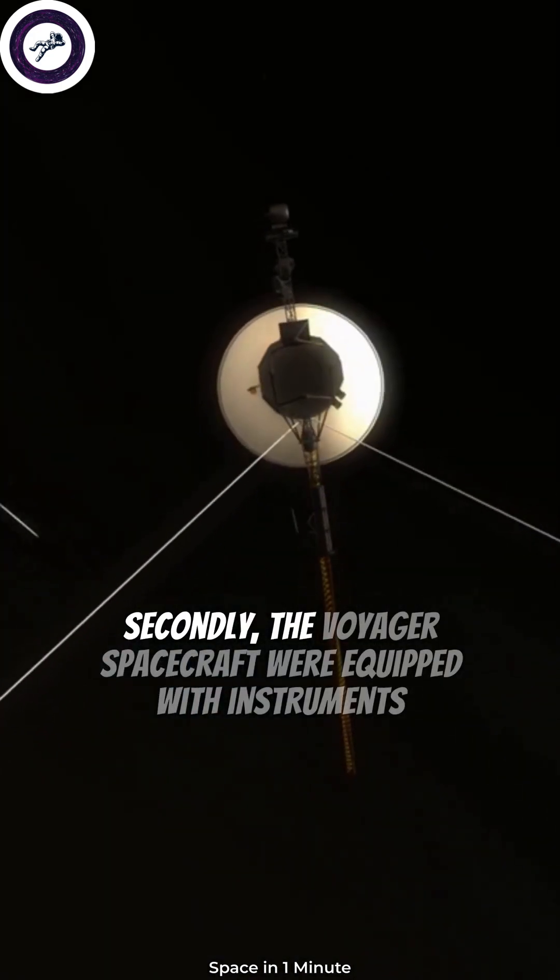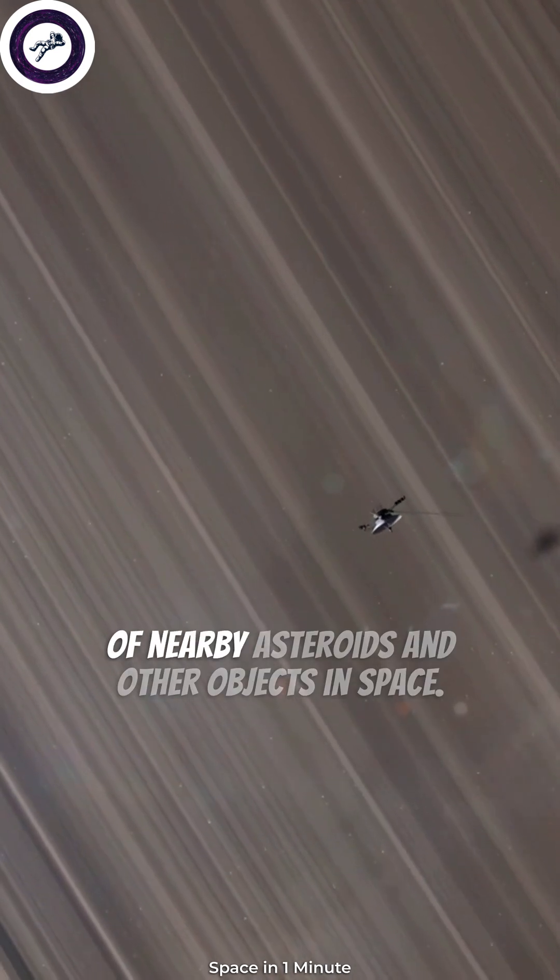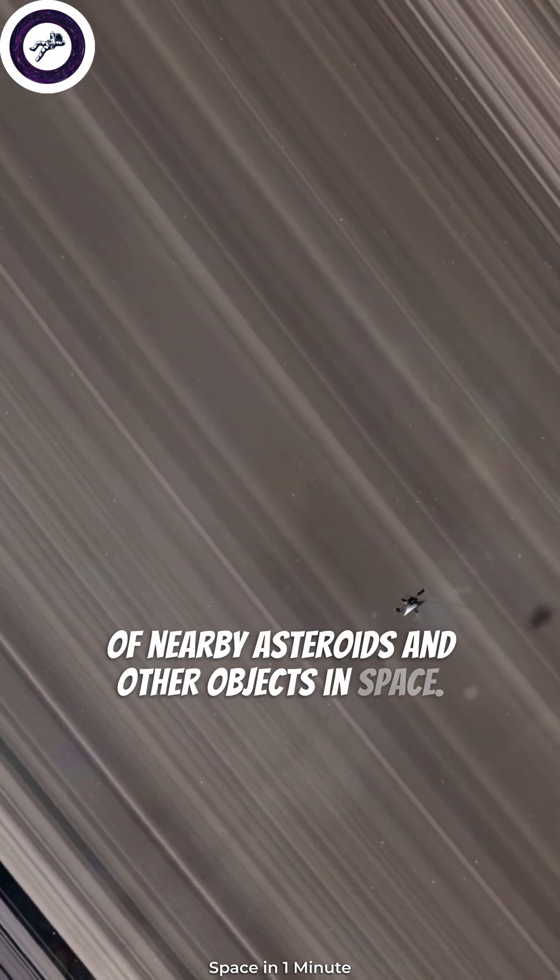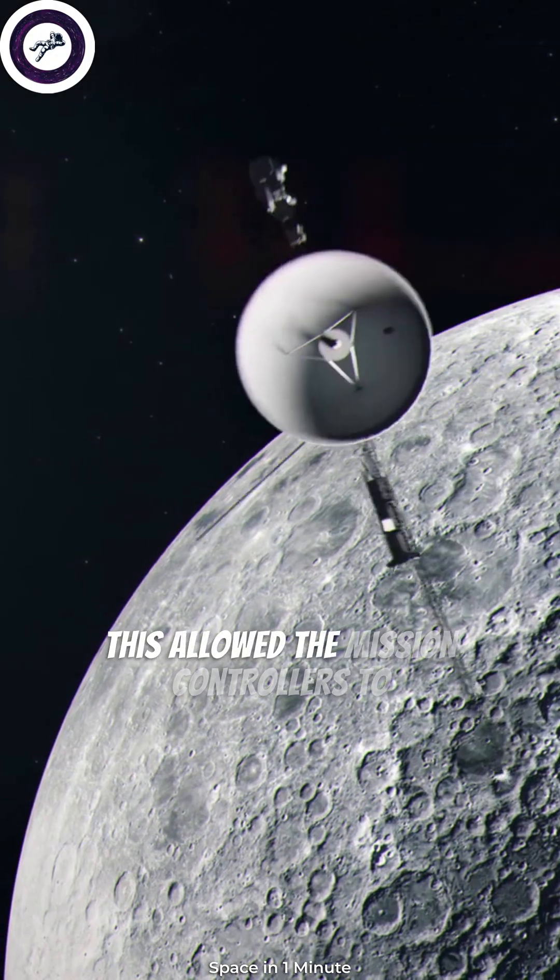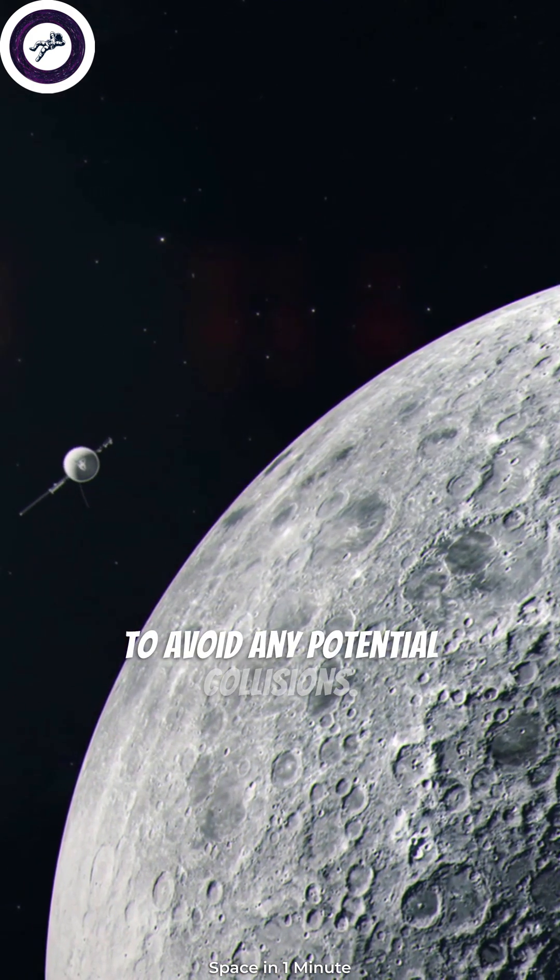Secondly, the Voyager spacecraft were equipped with instruments that could detect and map out the locations of nearby asteroids and other objects in space. This allowed the mission controllers to adjust the spacecraft's trajectory if necessary to avoid any potential collisions.